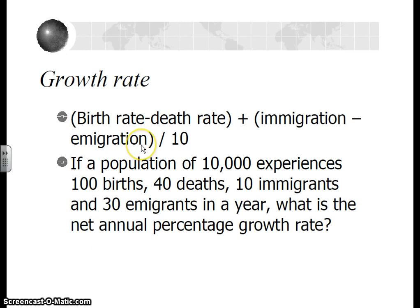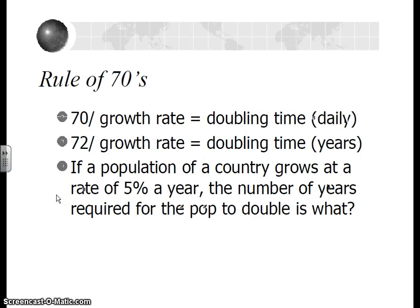Growth rate — everybody, make sure you write this down. This is a formula that will tell you how quickly a population will grow. You get births minus deaths plus immigration minus emigration, then divide that by 10. Try this example on your own at home. The Rule of 70 is a way to estimate doubling time really quickly: take the number 70 or 72, divide that by your growth rate, and you'll get a pretty solid estimate of doubling time.